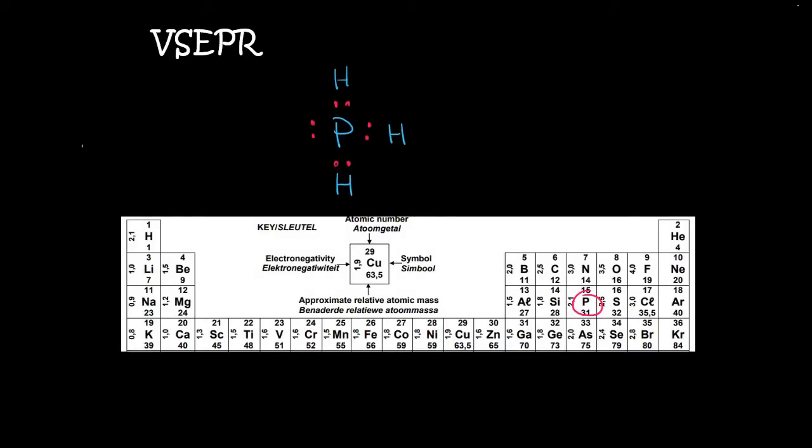And so here we have, surrounding the central atom, we've got 1, 2, 3, 4 groups. Do we have any lone pairs? Yes, we have 1. Why? Because there's nothing over here. So we have 4 groups with 1 lone pair.